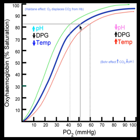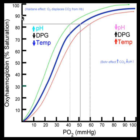This curve for hemoglobin is called a sigmoid curve — it's an S-shape. The top region, where the curve is more flat and has the least slope, is where hemoglobin has a very high affinity for oxygen, meaning it holds on to it very tightly. Between about 100 and 70 on the x-axis, even though you have a big change in partial pressure, you have a very small change in percent saturation — meaning hemoglobin is not giving away the oxygen; it's holding on to it.